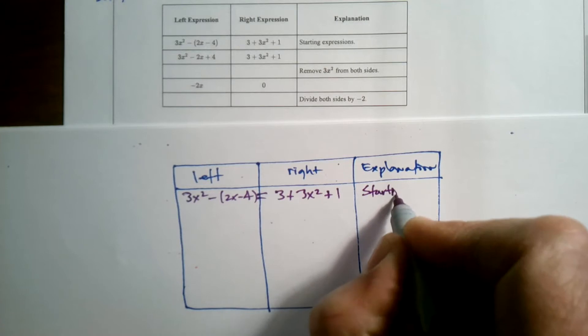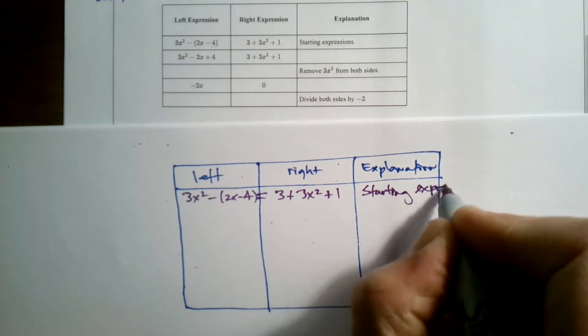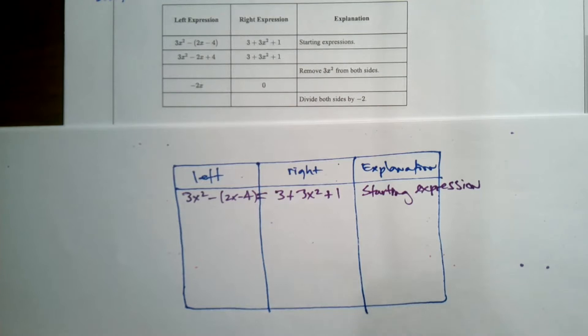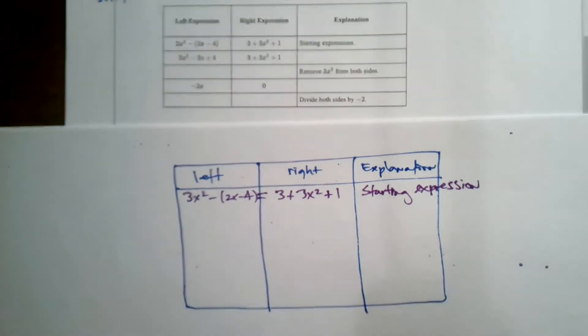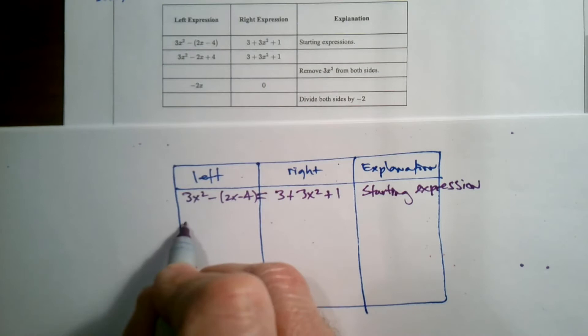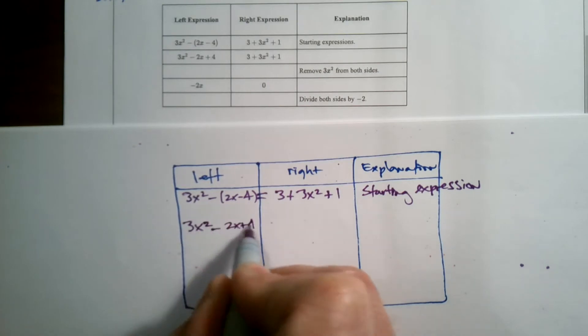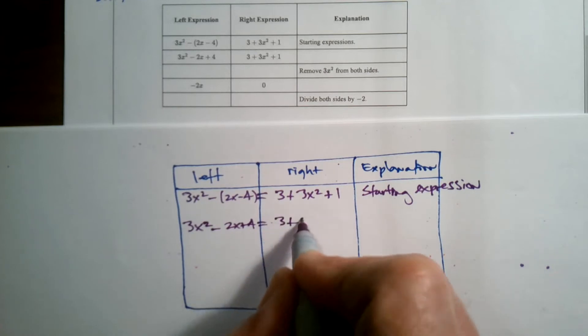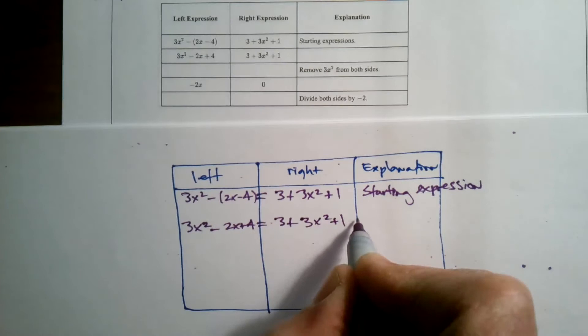And the explanation is that it's the starting expression. I realize I'm going to be outside of my table here, but you'll be able to read that. So then the next step they've got written is 3x² - 2x + 4. I'm going to still put, I'm bringing the equal sign down, equals 3 plus 3x² plus 1. And they want to know what is the explanation?